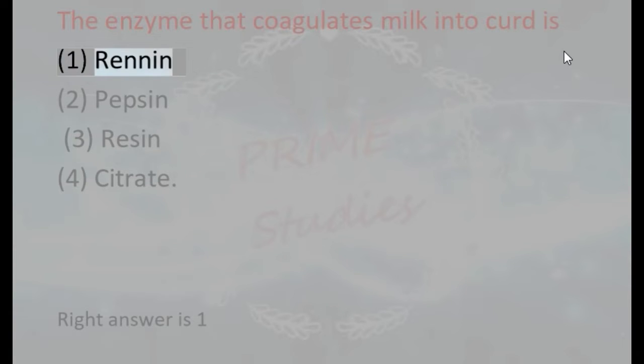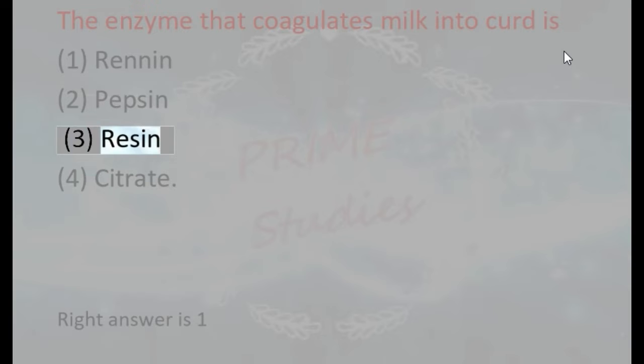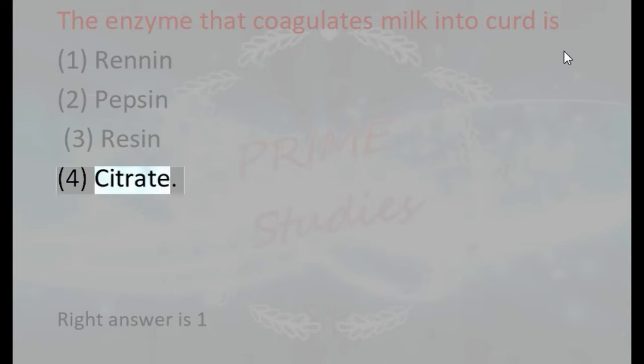The enzyme that coagulates milk into curd is: 1. Rennin, 2. Pepsin, 3. Resin, 4. Citrate. Right answer is 1.